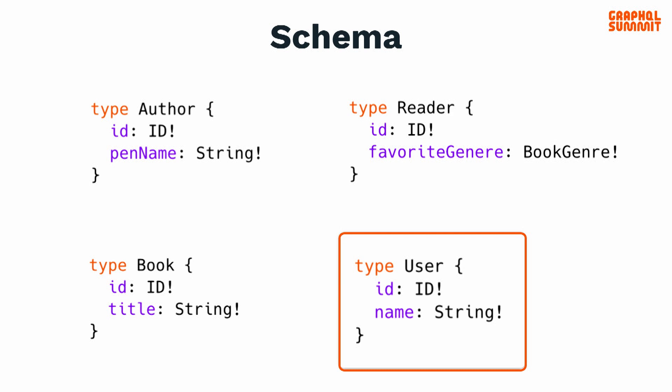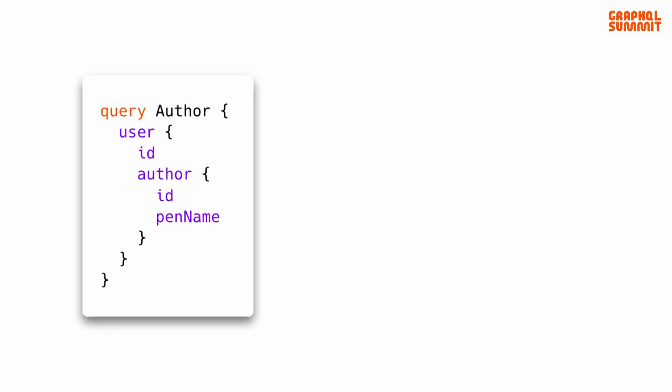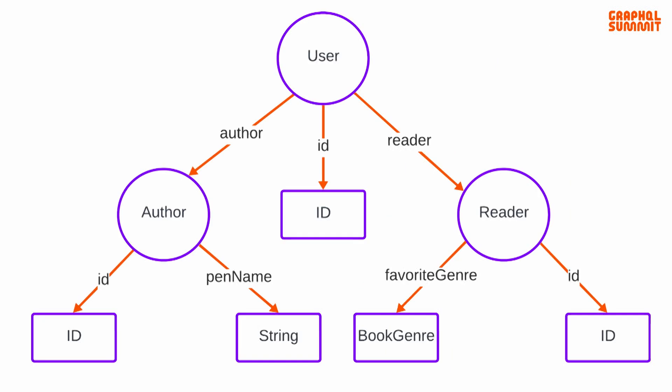Let's take the user type and add an author field to it, because a user can be an author. If we build a query to get author info, we can visualize that query with a graph where the edges represent field names and nodes are the types in our schema. Now if we add a reader field to user, we can visualize the entire schema with this graph. As we build features, we'll be revisiting this schema graph.